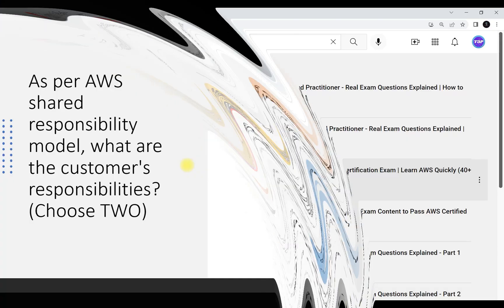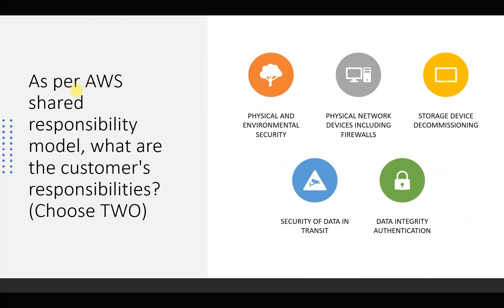Let's talk about the first question. They are asking: as per the AWS Shared Responsibility Model, what are the customer's responsibilities? We need to identify two correct options out of five. The options are: physical and environmental security; physical network devices including firewall and switches; storage device decommissioning; security of data in transit; and data integrity and authentication. When we talk about the shared responsibility model, we need to keep two things in mind: who takes care of the cloud infrastructure, and who takes care of what's inside the cloud.